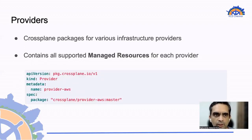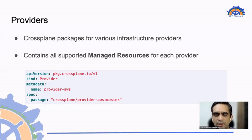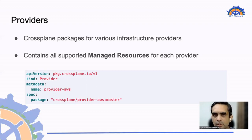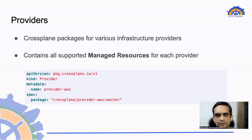The first concept is providers. As the name suggests, providers are the actual infrastructure providers — the actual Crossplane packages that get installed on a cluster. They deal with the actual cloud service APIs whenever a particular resource needs to be created. In this example, you can simply install a provider such as provider AWS, which has all the required managed resources, and it can be used to create any resource within the AWS cloud.